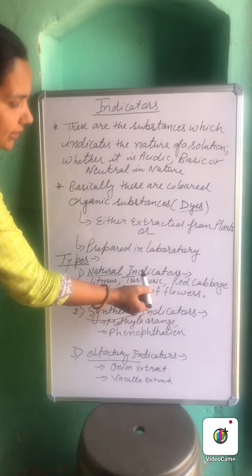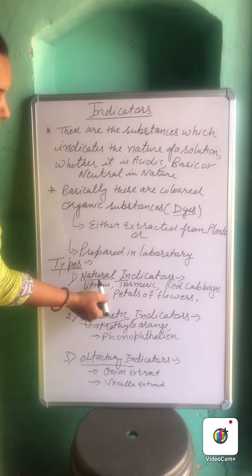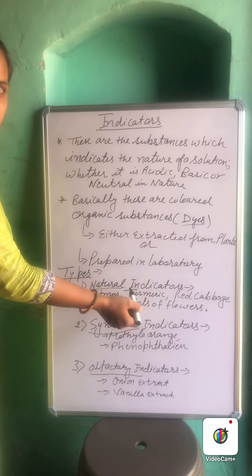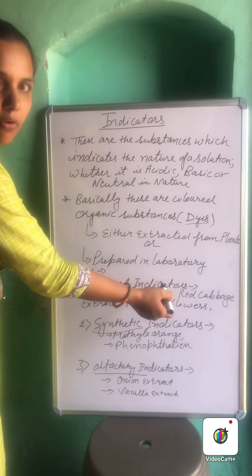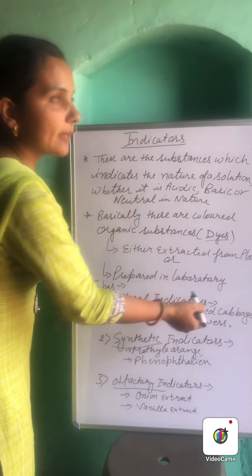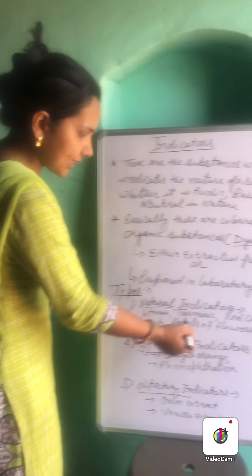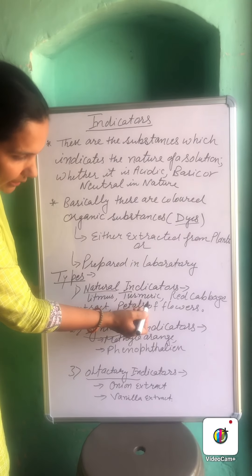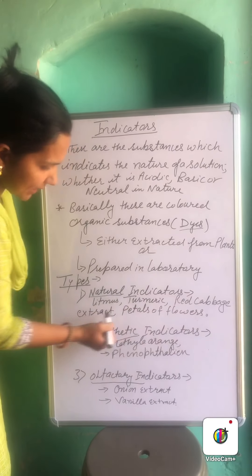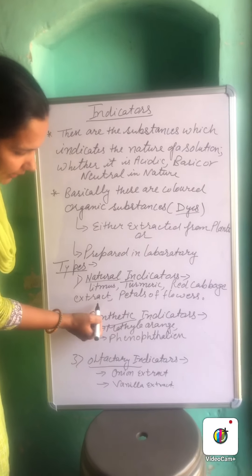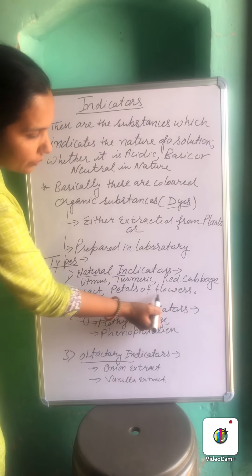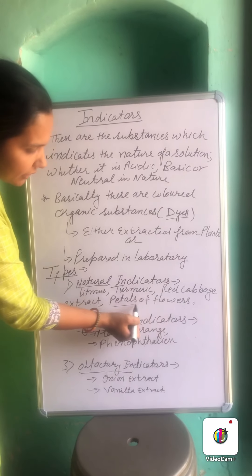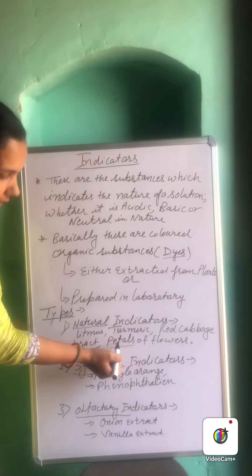The first is the natural indicators. As the name indicates, these are found in nature and extracted from different types of plants. Examples of natural indicators are litmus, turmeric — the haldi which we use at home — red cabbage extract or red cabbage juice, and petals of flowers, which are the colorful parts of flowers used as natural indicators.